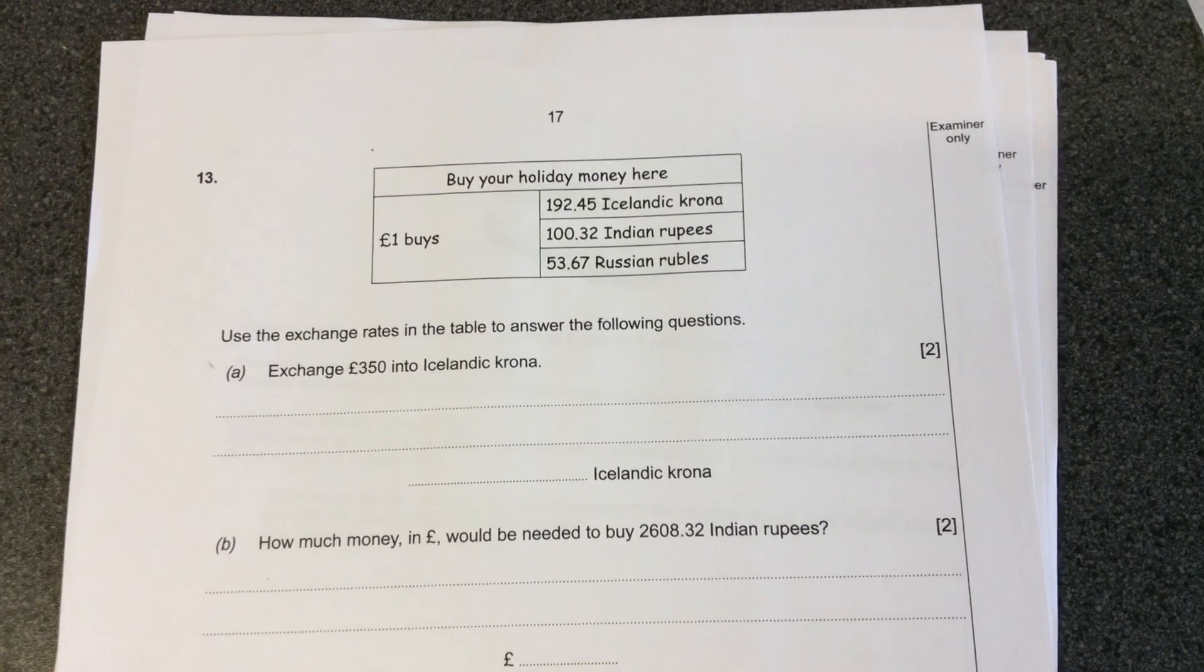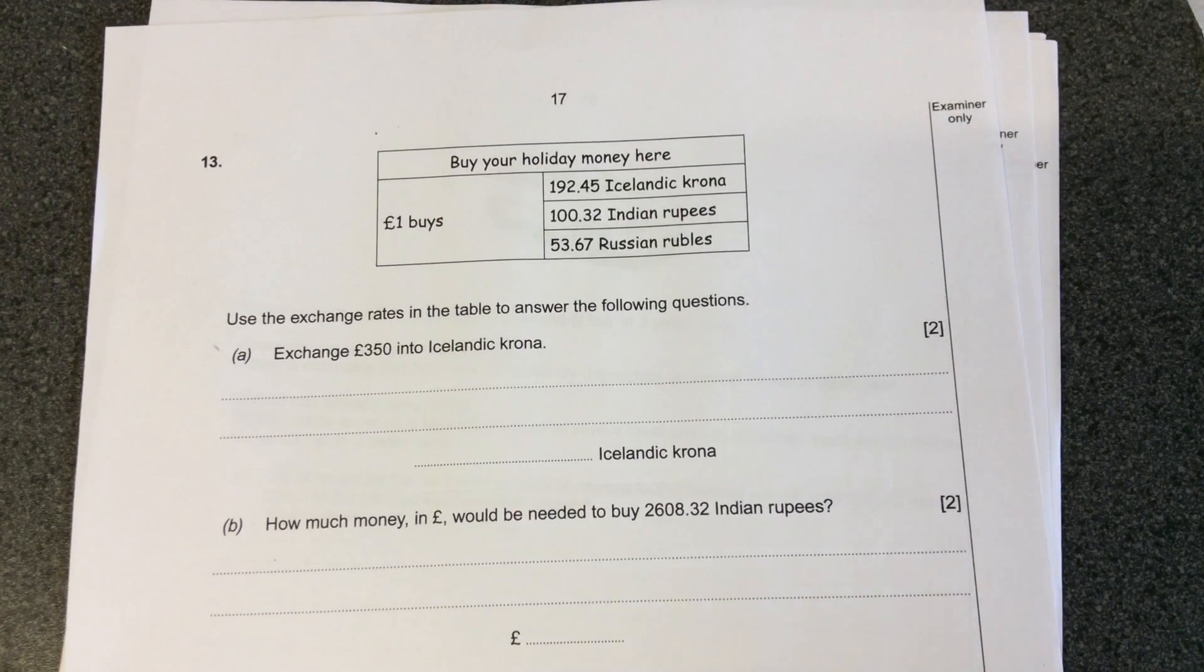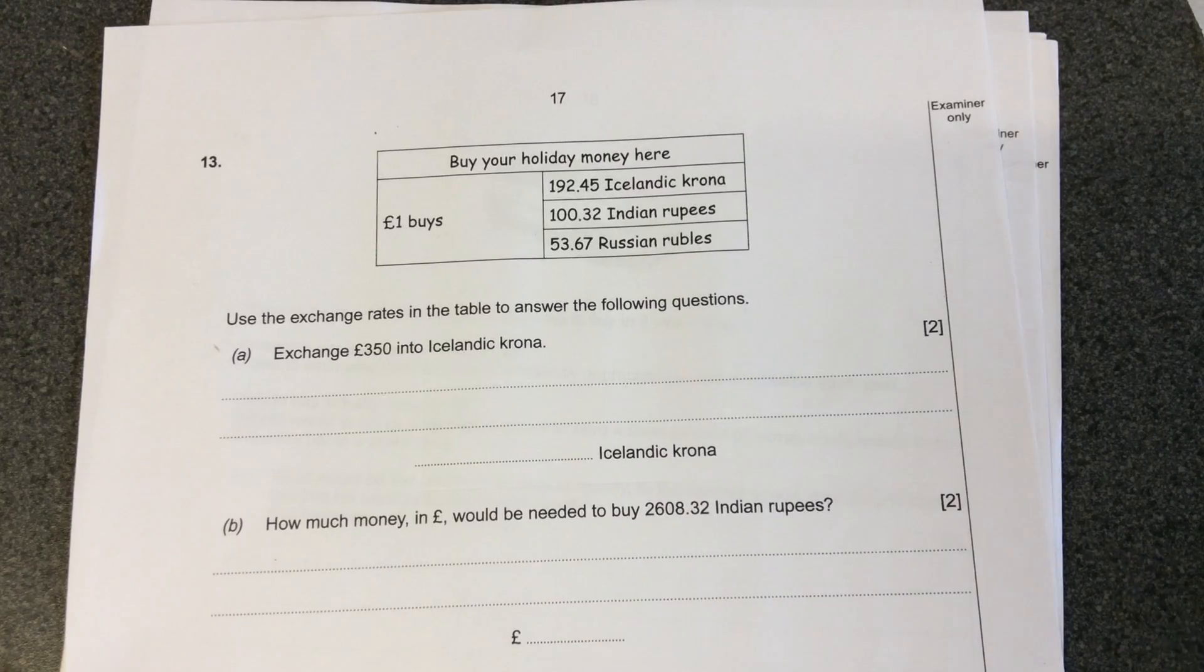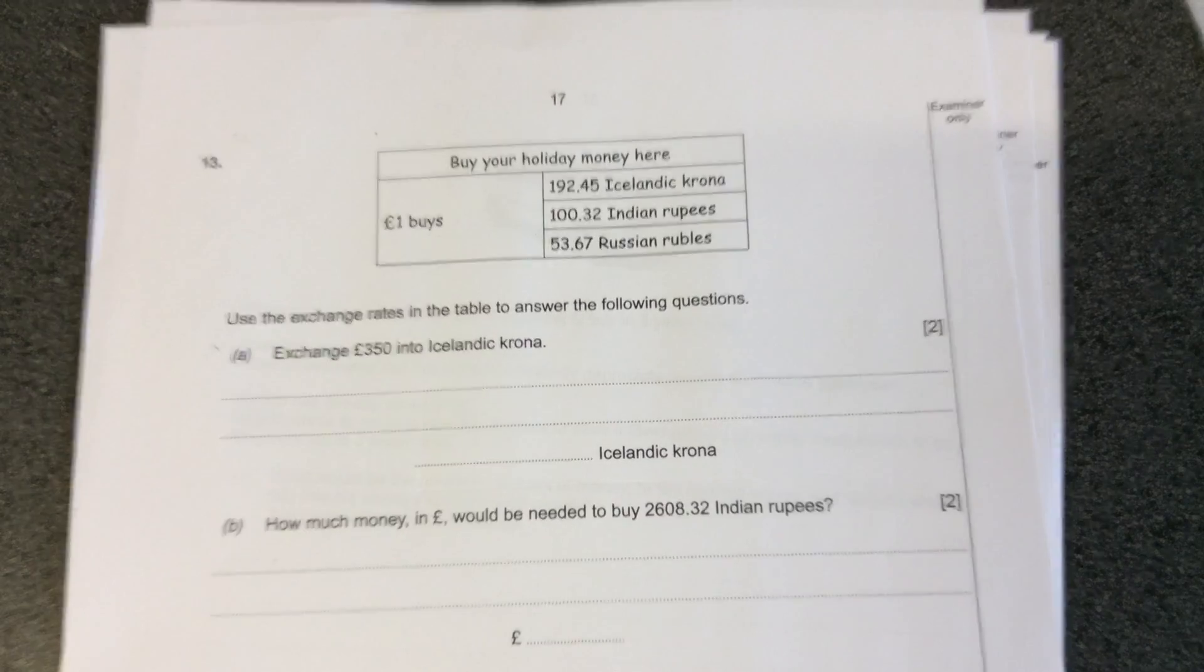Question 13. When we're working with foreign exchange, to exchange from our money to theirs, you multiply by the exchange rate. So when you're looking at this, one pound is equal to 350.